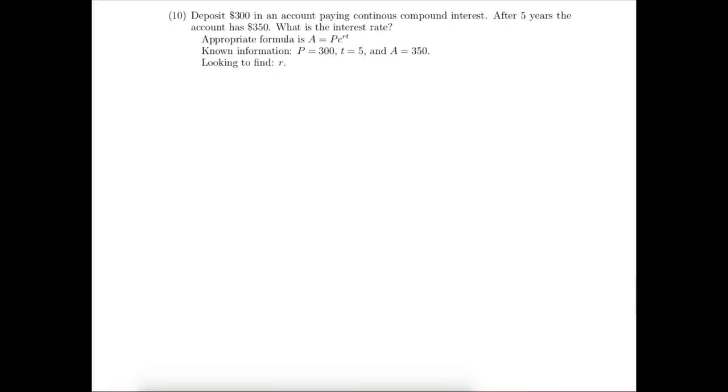Here's our next problem. We again notice that it's a continuous compound interest problem, so the appropriate formula is the continuous compound interest formula. The known information is that the present value is $300 — that's the principal, the amount we will deposit. The time is going to be a five-year time period. The future value is $350, and so we're looking to find what the interest rate would need to be for that to occur.